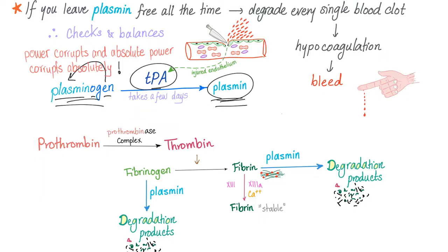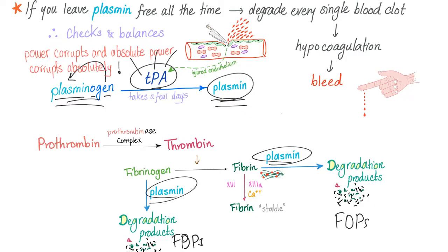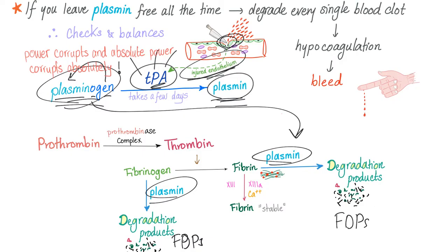Several factors, including the great TPA — tissue plasminogen activator. It's a plasminogen activator because it activates the plasminogen. It comes from the tissue, specifically from the injured, traumatized endothelium. First you have plasminogen; TPA coming from the injured endothelium is going to activate plasminogen into plasmin.